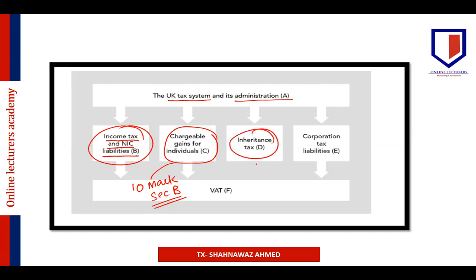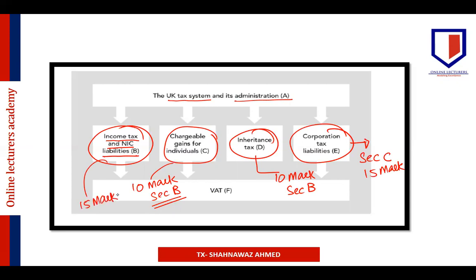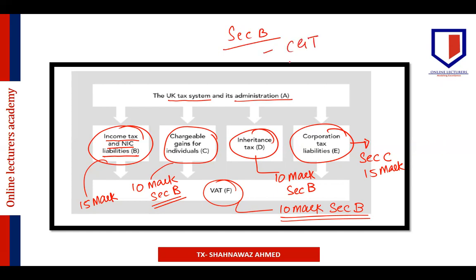Inheritance tax will always have a minimum 10-mark question in Section B, and the examiner might ask something in Section C as well. Corporation tax is very important and will appear in Section C as a 15-mark question. Similarly, income tax will have a 15-mark question in Section C. Value-added tax will have a minimum 10-mark question either in Section B or possibly in Section C. So the three questions in Section B would most likely come from CGT, VAT, and inheritance tax.